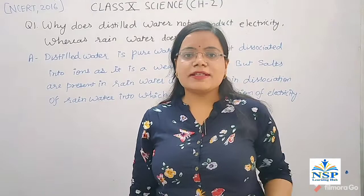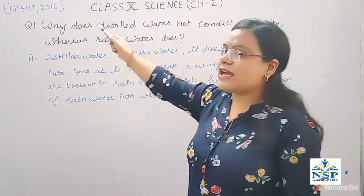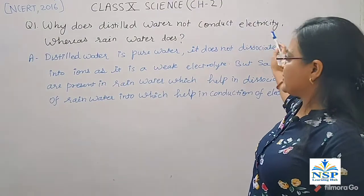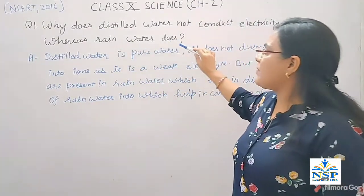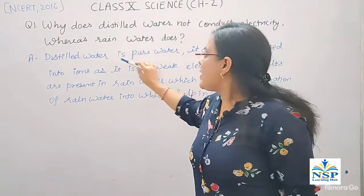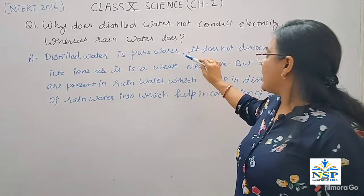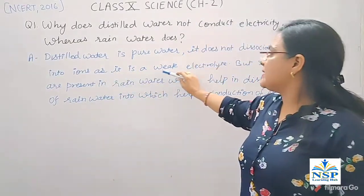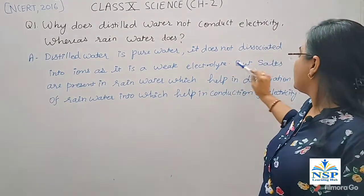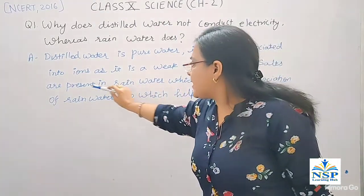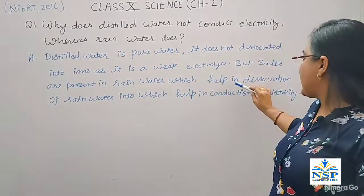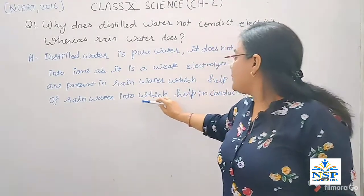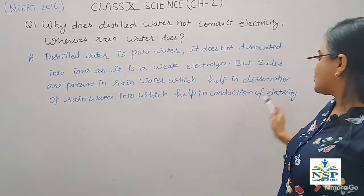Our first question is an NCERT question: Why does distilled water not conduct electricity whereas rainwater does? Distilled water is pure water; it does not dissociate into ions as it is a weak molecular line. But salts are present in rainwater which help in the dissociation of rainwater into ions, which helps in the production of electricity.